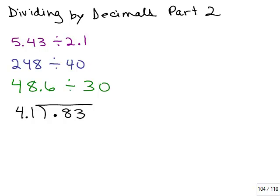This is Dividing by Decimals Part 2. We do a few more problems and also show you an easy way to divide by numbers that have extra zeros at the end like 40 or 30.